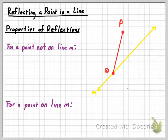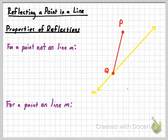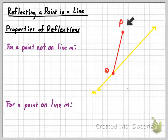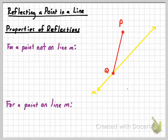When you reflect a point in a line, there are two cases to consider. First, whether the point is or is not on the line of reflection. Point P is not on line M, and point Q is on line M. The basic principle is: whenever you reflect a point in a line, its image is going to be exactly the same distance away from the line of reflection on the opposite side.